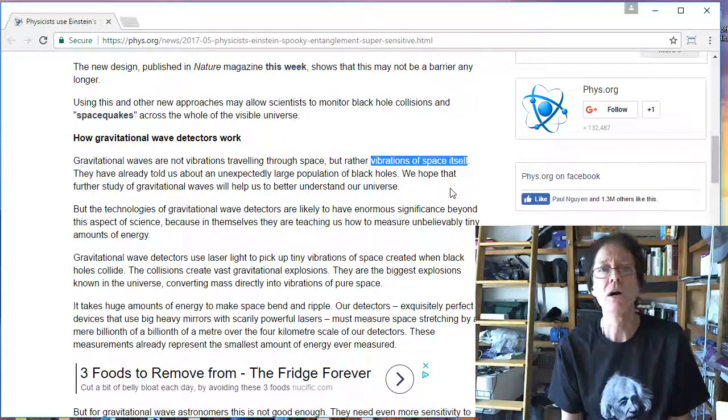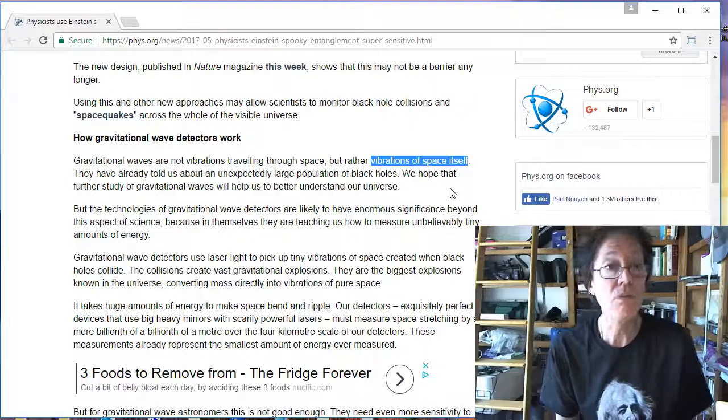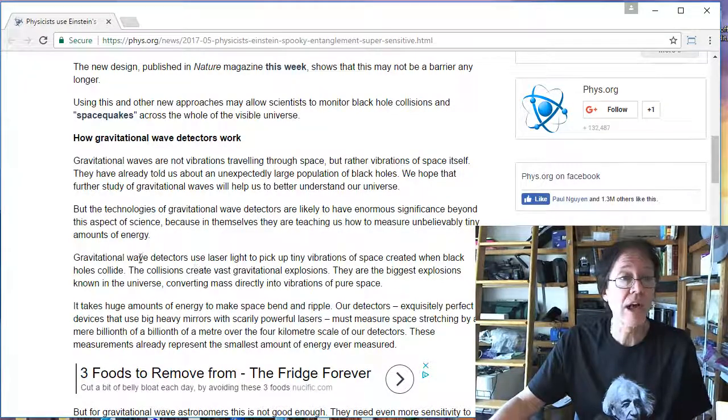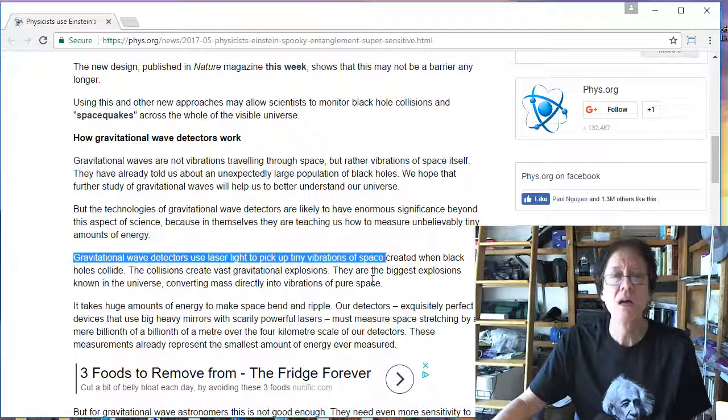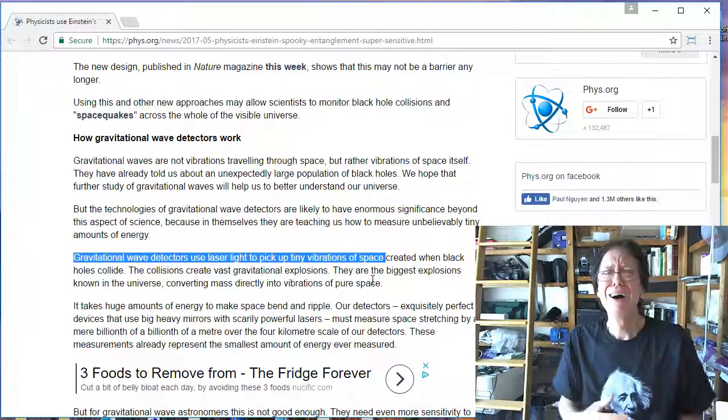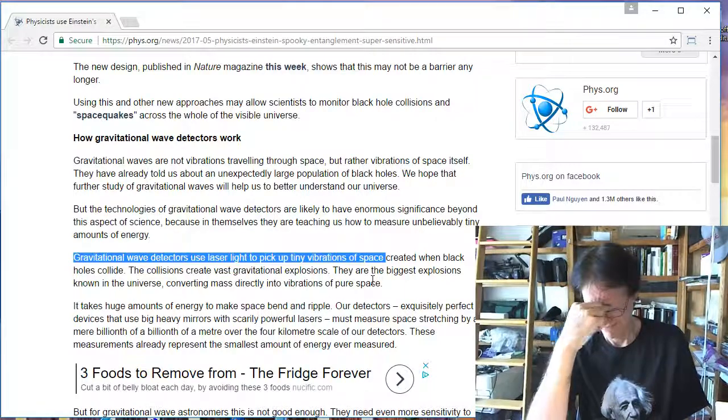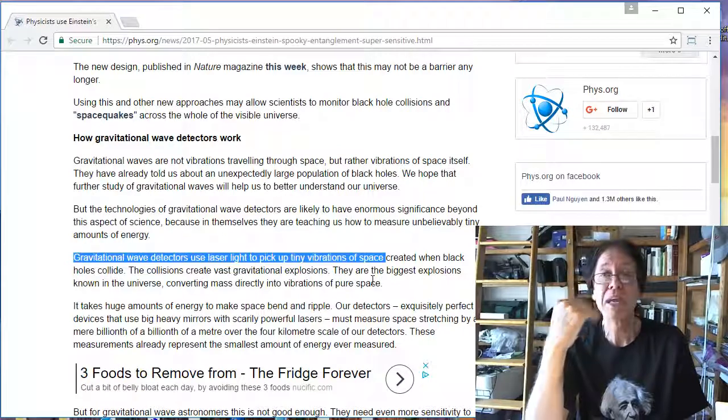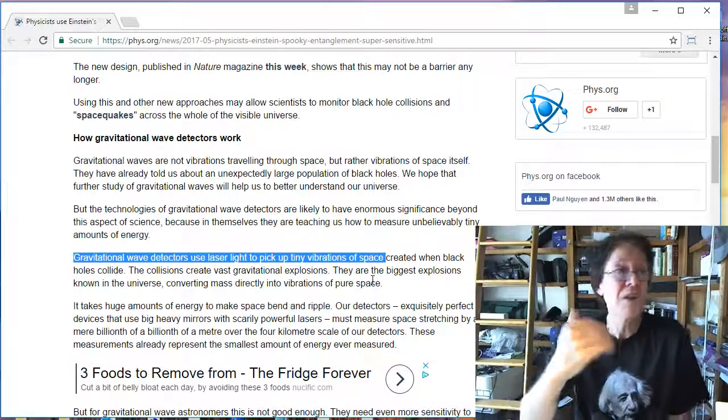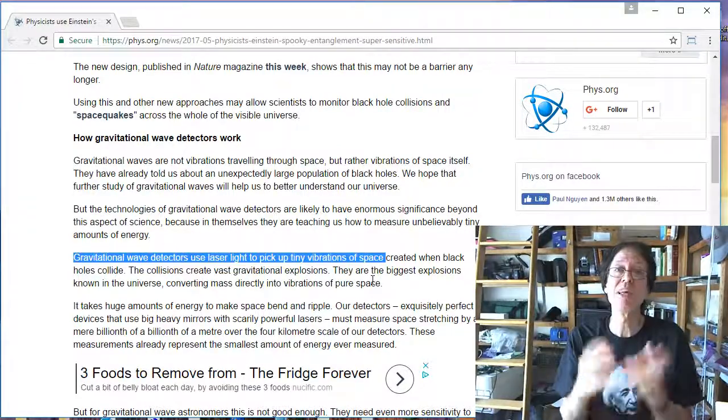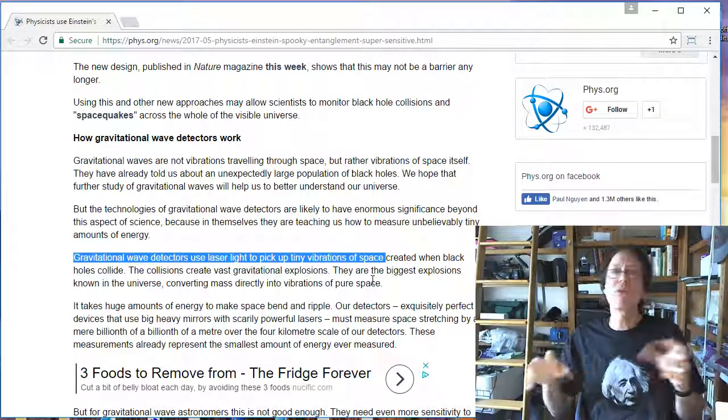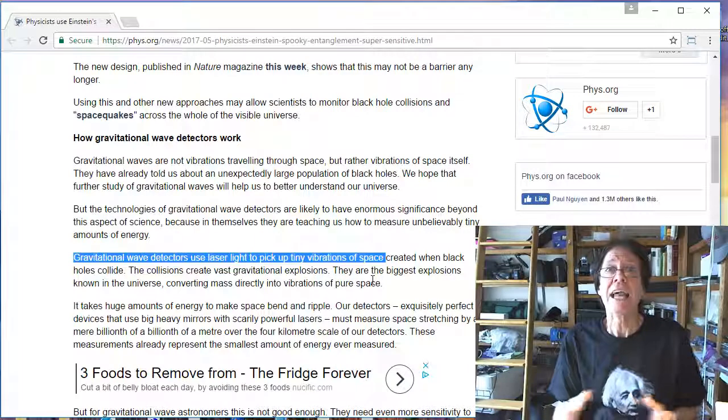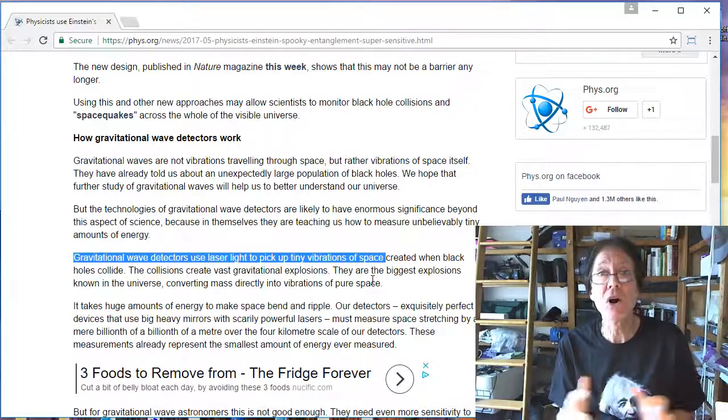We talk about the vibrations of space itself. Gravitational wave detectors use laser light to pick up tiny vibrations of space. Tell me what, again, we're picking up what? How can you pick up vibrations of space? What they think. This is what they're thinking. That space is some magical thing or nothing or whatever it is, and it vibrates. It's got to have physicality to vibrate, folks.